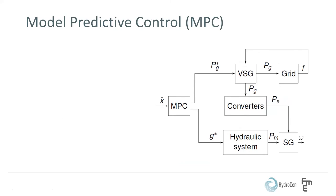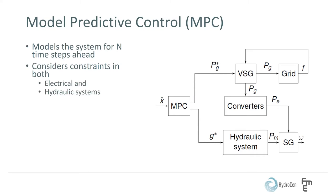Model predictive control, MPC, is utilized in this paper to optimize the control of the variable speed hydropower plant. The MPC models the system for a given number of time steps ahead to predict the system's performance. It is able to consider constraints in both electrical and the hydraulic system. With this information, the MPC optimizes the system for each time step by minimizing a defined cost function. And is thereby able to coordinate the control of the hydraulic and electric system by setting the power reference to the VSG and the guide vane opening reference to the turbine.